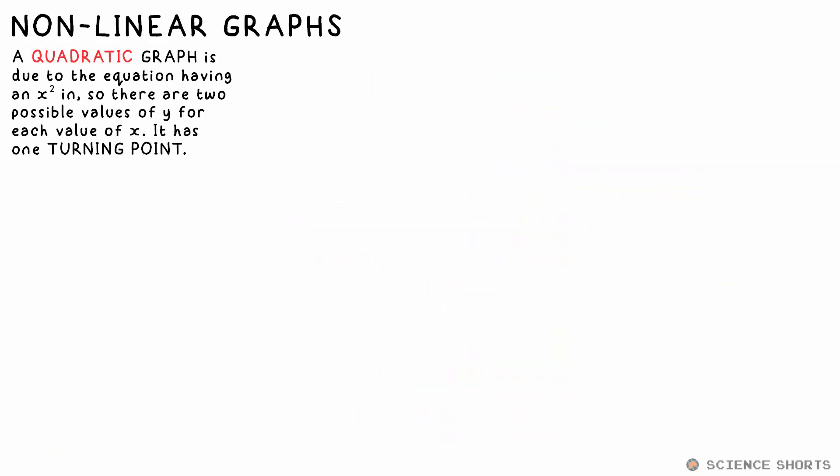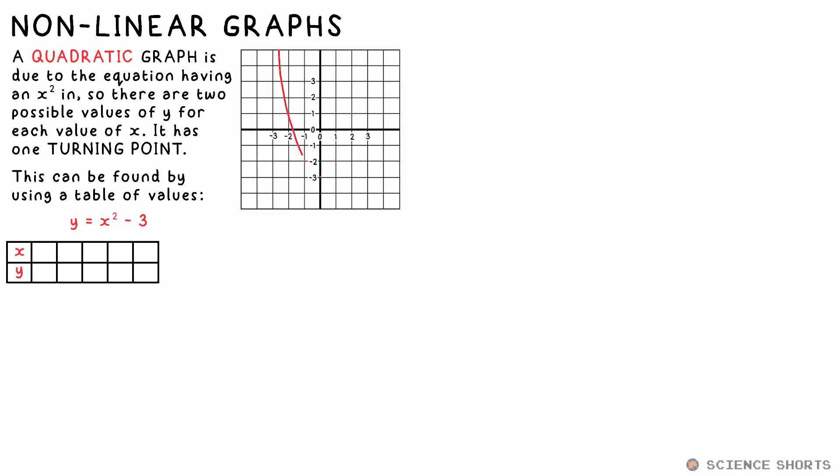Non-linear graphs are a bit trickier than linear graphs. It's very difficult to determine what the equation is from looking at values on the graph. Take y equals x squared minus three, for example. When x is zero, y is minus three. That's our y intercept. Fine.